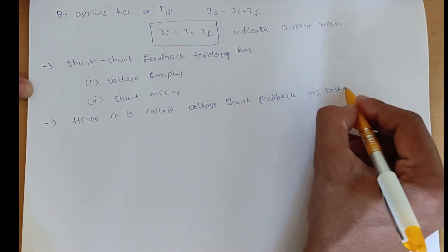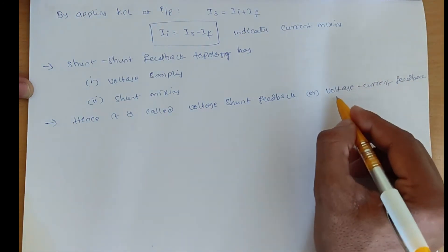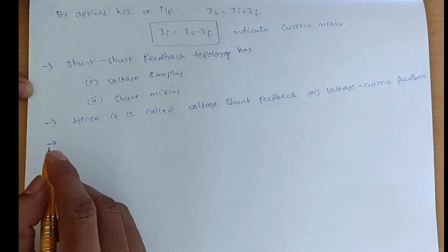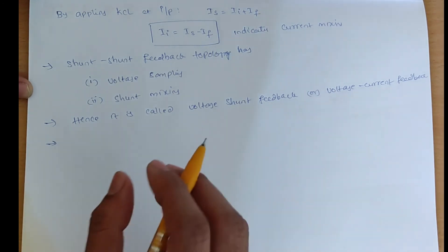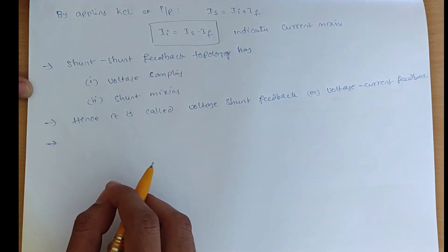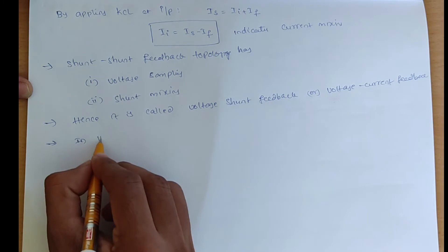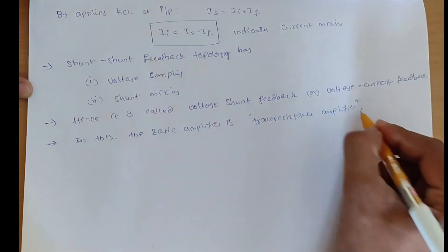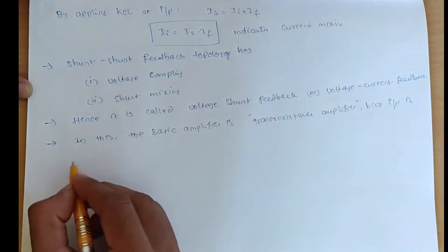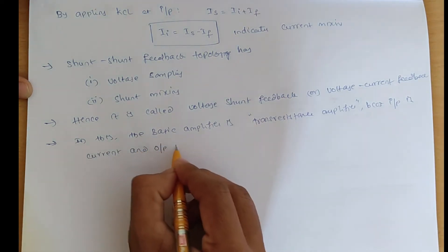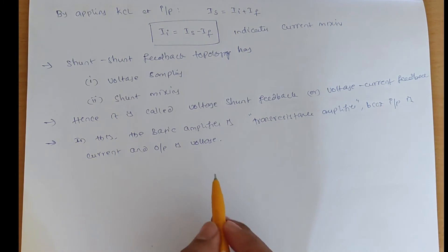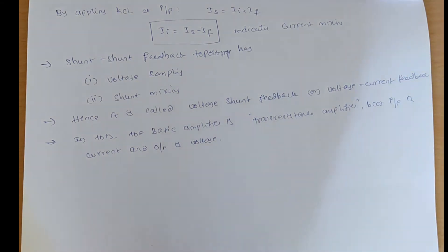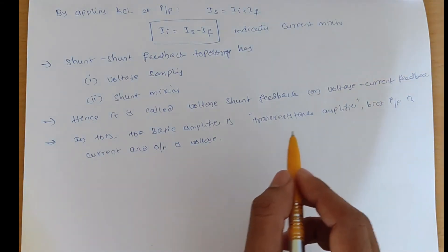You can also call it voltage-current feedback — voltage is sampling and current is mixing. In this shunt-shunt feedback amplifier, the output is voltage and the input is current. So the basic amplifier is a trans-resistance amplifier, because input is current and output is voltage. Output voltage divided by input current indicates resistance, so output voltage by input current indicates a trans-resistance amplifier.